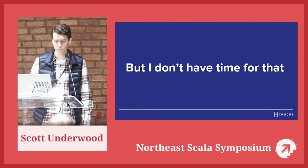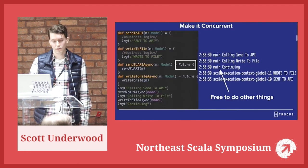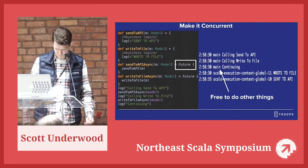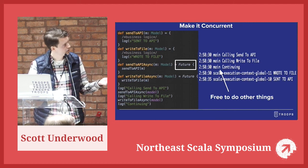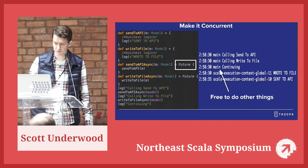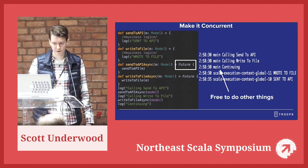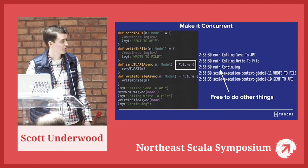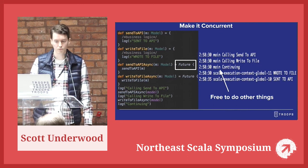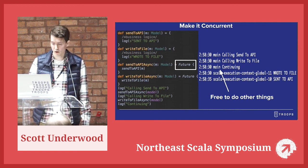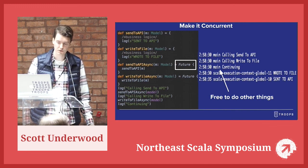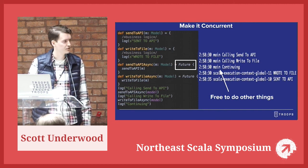To make the same code concurrent, you just make these calls asynchronous by wrapping them in futures. When we run this version, we've called the API, we're immediately calling write to file, we're immediately continuing. We're now free to go about our business. Everything's just wrapped in a future. So what is this future thing?